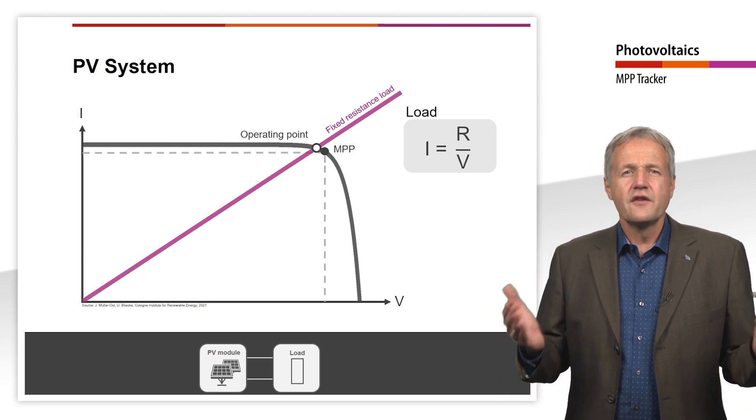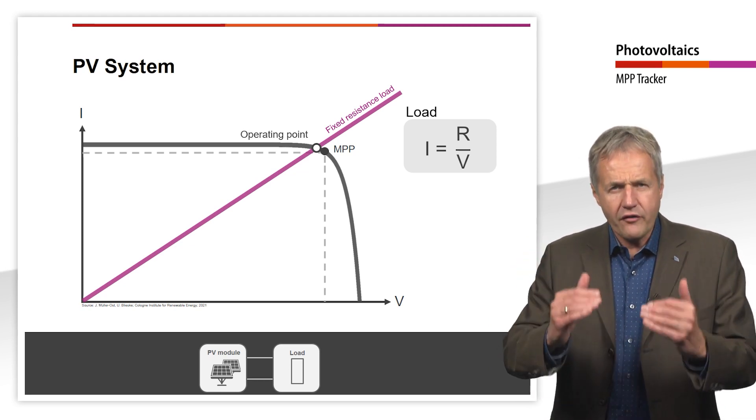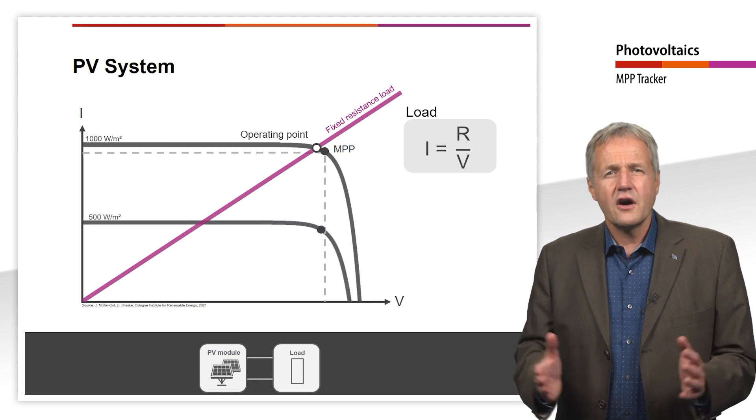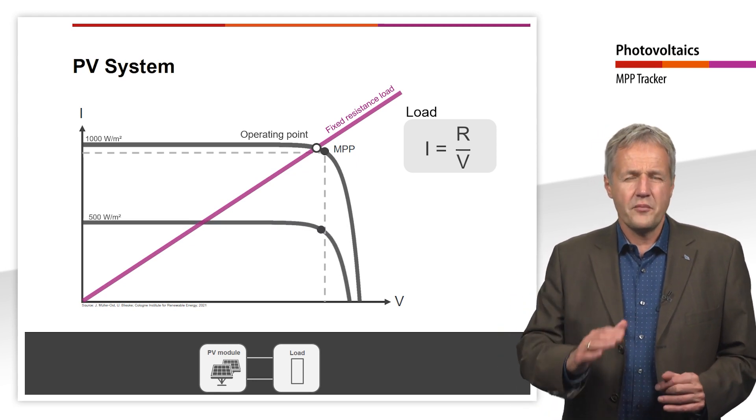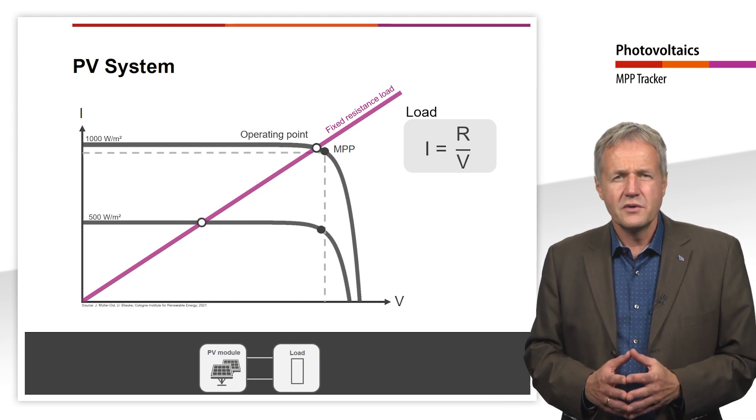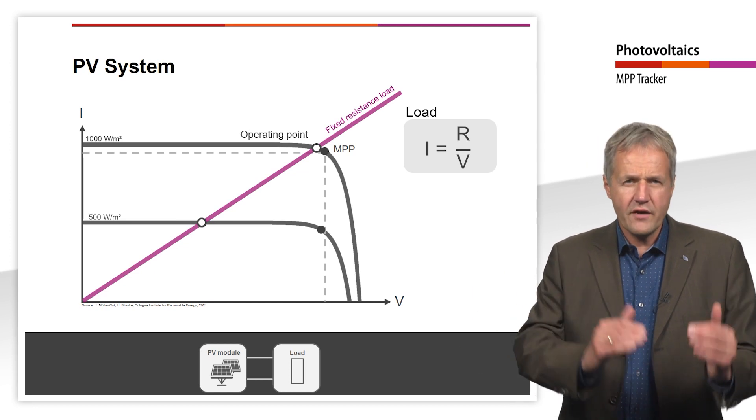The module would then deliver the maximum possible power to the resistor. If, however, the irradiance on the module changes, the current of the module IV curve drops. This results in a new intersection, which in the case shown here is far away from the MPP.